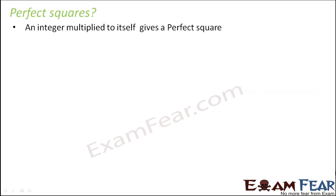So what are perfect squares? Perfect squares are integers multiplied to themselves. Whenever an integer is multiplied to itself, it gives a perfect square. For example, take the integer 1. When 1 is multiplied to itself, you get 1 squared, which is 1. So 1 is a perfect square.